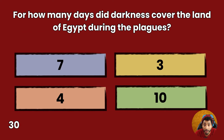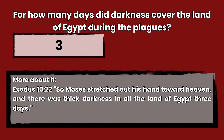Question 30: For how many days did darkness cover the land of Egypt during the plagues? 7, 3, 4, or 10? Answer: 3. Exodus 10:22 — So Moses stretched out his hand toward heaven, and there was thick darkness in all the land of Egypt three days.